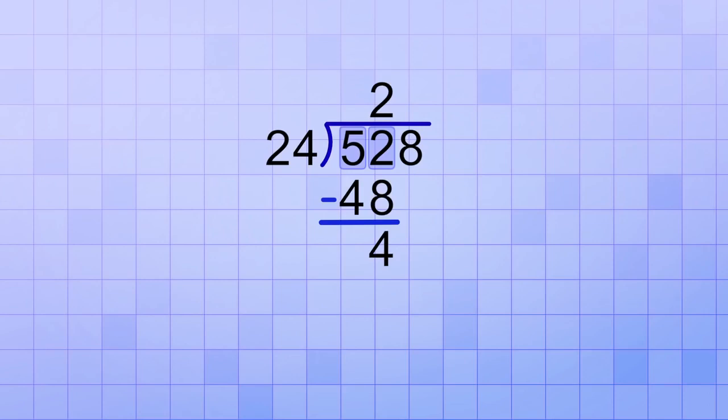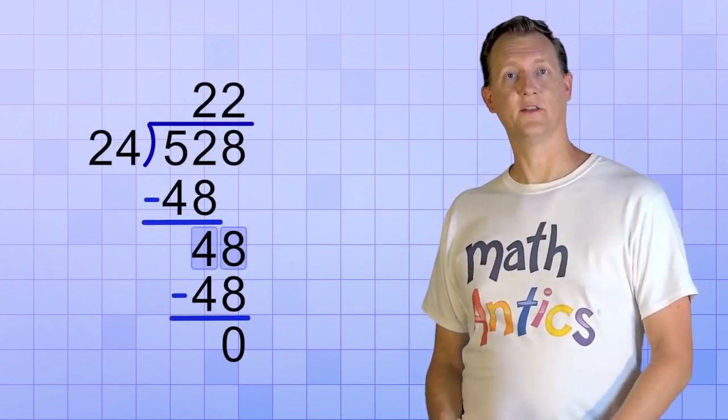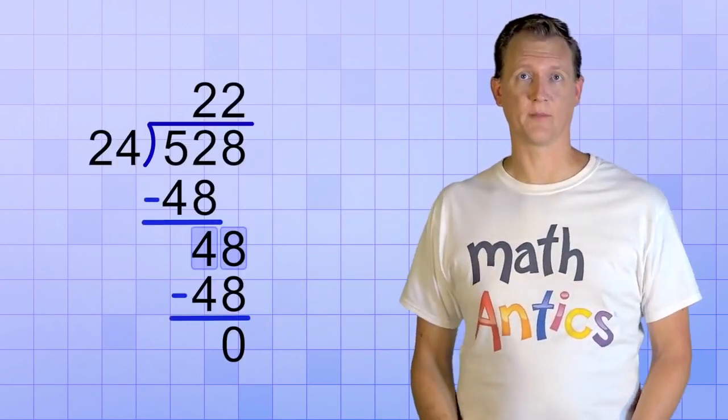We've already dealt with the first 2 digits of the dividend, so now we bring down the last digit to join the remainder and ask how many 24's will make 48. That's easy! It's 2 again! Because we just saw that 2 times 24 is 48, so that will leave no remainder. So the answer to this first 2 digit divisor problem is 22.